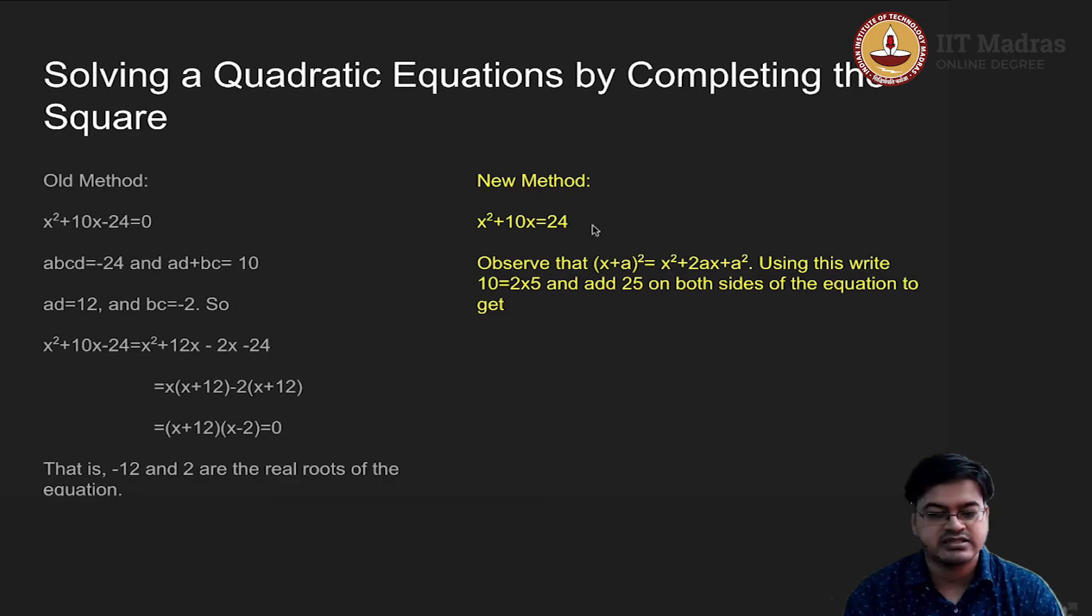If I want to write x + a the whole square then what I need to do here is to add some number and subtract some number or add the same number on both sides. In this case if you look at this expression x + a square which is x² + 2ax + a². This a is the number that I am looking for. In this case if I consider this expression and if I want to add a number which will typically be a², what that a² should be is the first question.